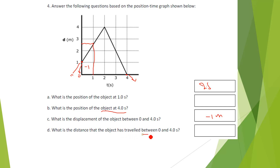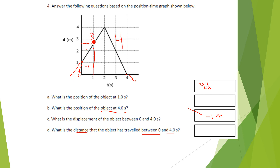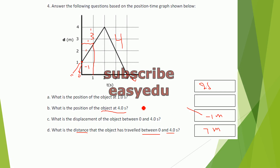Now for the total distance traveled between zero and four seconds: the object started at one, traveled to four, covering three meters in the first two seconds. In the other two seconds it came back — traveling one meter behind the starting position, covering four meters. So the total distance is three plus four, equal to seven meters. During this four-second journey the object covered a total of seven meters.